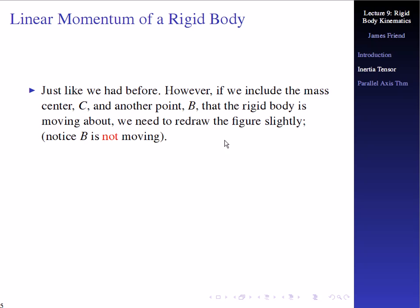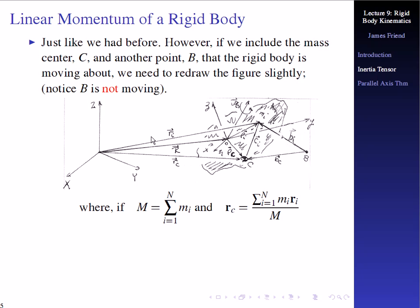Including the mass center C and another point B that the rigid body moves about, we redraw the figure slightly. We assume, in contrast to earlier lectures, that B is not moving. We have the original fixed coordinate system O, X, Y, Z in capital letters, the center of mass given by C, and a variety of vectors from the coordinate system attached to the moving body.